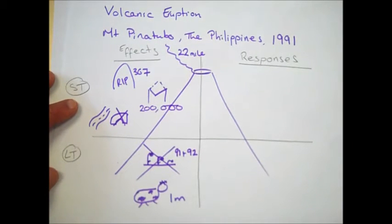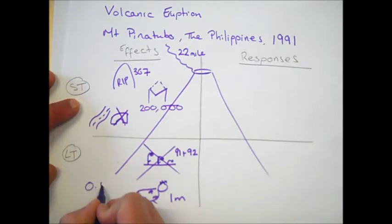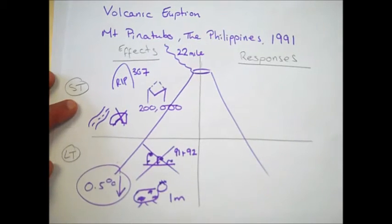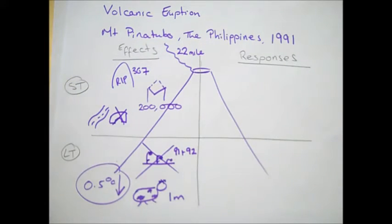These are all local secondary effects. One of the more global scale effects was a 0.5 degree cooling in global temperatures. This is actually on a global scale, and that was a result of the ash in the atmosphere blocking out the sun and actually resulted in worldwide temperatures dropping for that year.